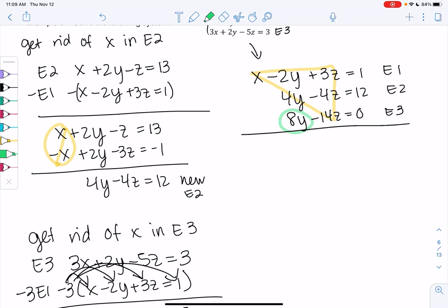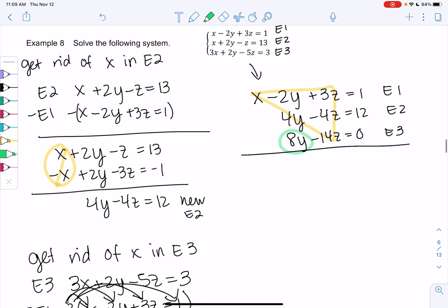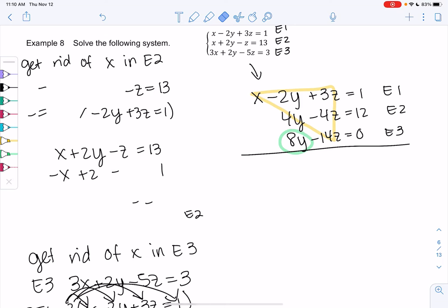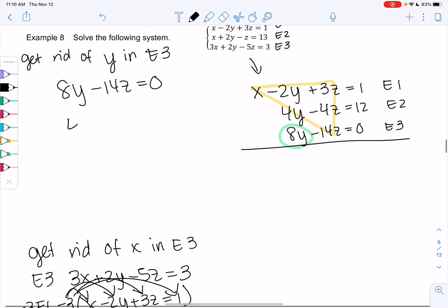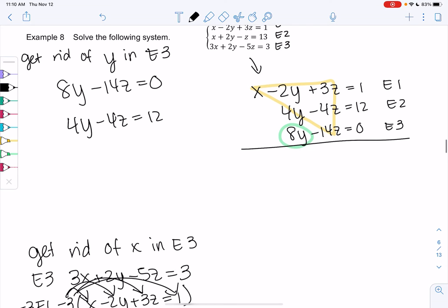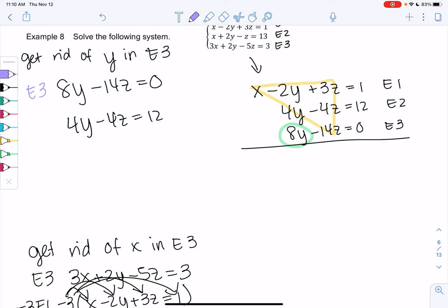And then we almost have a triangle, we just have to get rid of the y in the last row. So we'll do one more of these operations, and then we can get rid of y. So it looks like I don't want to use E1 because then I'm going to bring x back. So I'm going to use E2 and E3 to get rid of y. So we're going to get rid of y in E3 to make that triangle. So E3 is 8y minus 14z equals 0, and then E2 is 4y minus 4z equals 12. So it looks like I have E3, and it looks like I'm going to have to multiply E2 by negative 2, and that's going to give me opposites for those y's, so they cancel out.